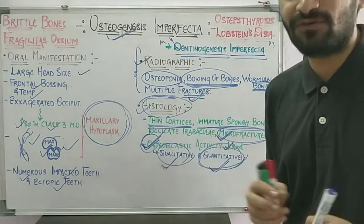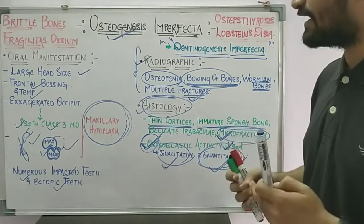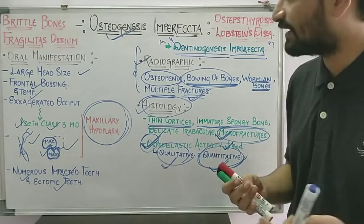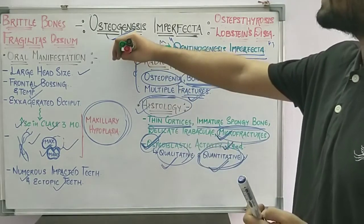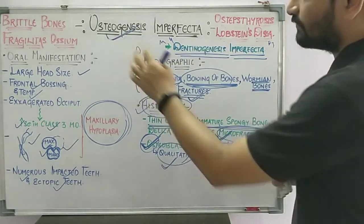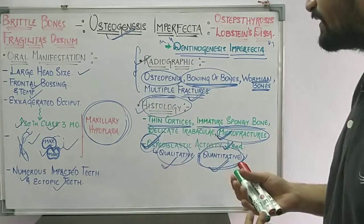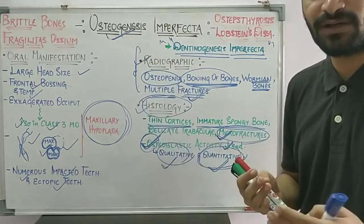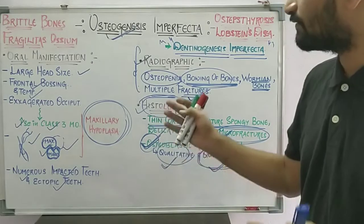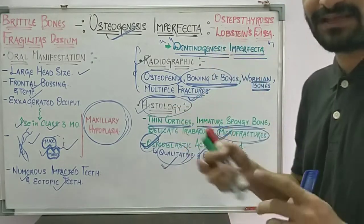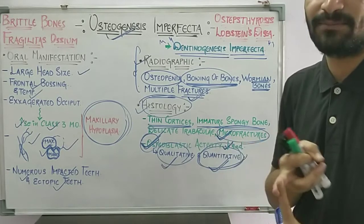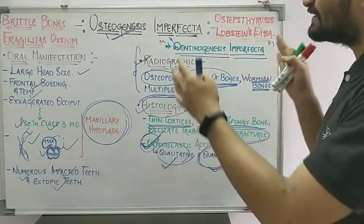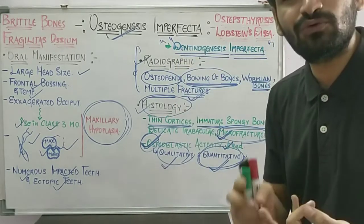Regarding treatment, there is no specific treatment for osteogenesis imperfecta — you can only manage infections or carry out regular supportive procedures. Regarding life expectancy, in Type 1 the patient can live comparably to the general population. In other types such as Type 2, 3, and 4, life expectancy is significantly decreased due to in utero fractures, stillbirths, and death before 4 weeks of age.